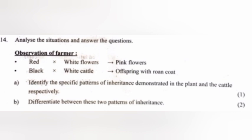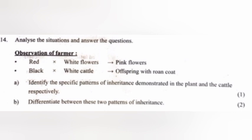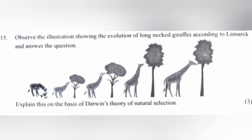Question 14: Analyze the situation and answer the questions. Part A: Identify the specific patterns of inheritance demonstrated in the plant and the cattle respectively. Answer: Plant — incomplete dominance; Cattle — codominance. Part B: Differentiate between these two patterns of inheritance. Answer: In incomplete dominance, a dominant allele cannot fully hide the allele of the recessive trait. In codominance, both alleles exhibit their traits at the same time.